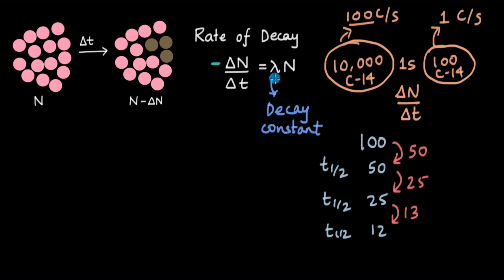This decay constant lambda is specific to a particular nucleus. It will have one value for carbon-14, a different value for carbon-15, a different value for a radioactive isotope of nitrogen, and different values for all the different radioactive nuclides.